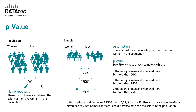Or to say it the other way around, it is only 3% likely that this sample is drawn from a population where the null hypothesis is true, which means that there is really no difference between men and women.